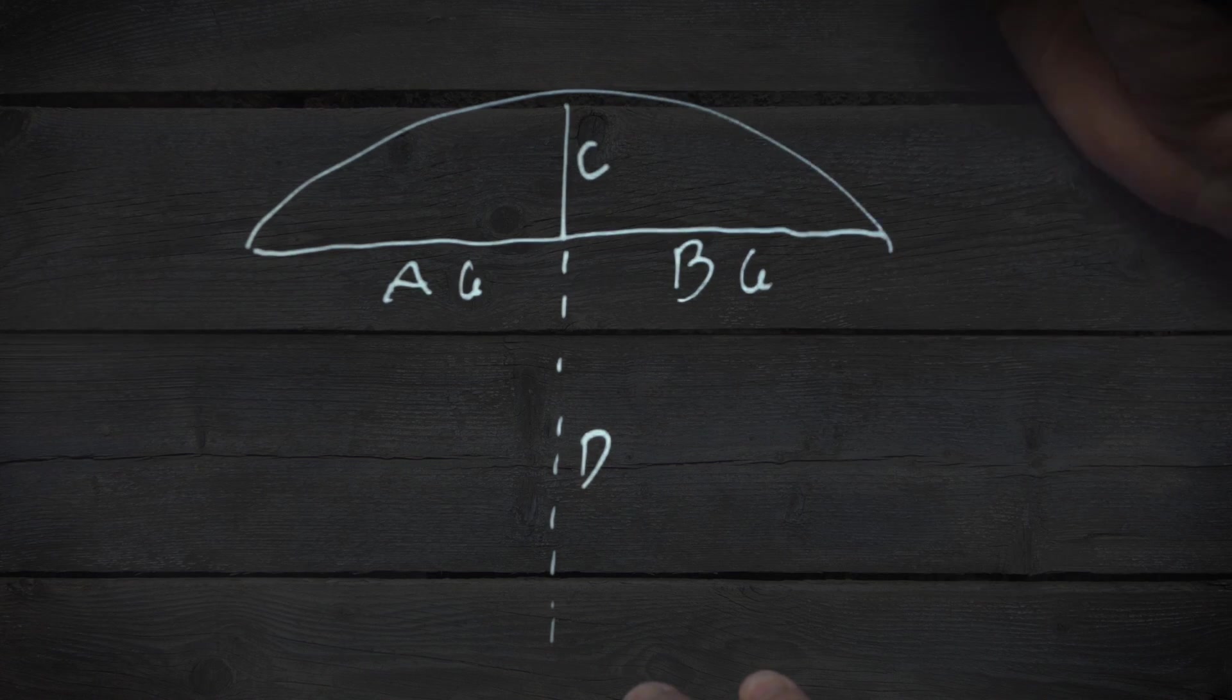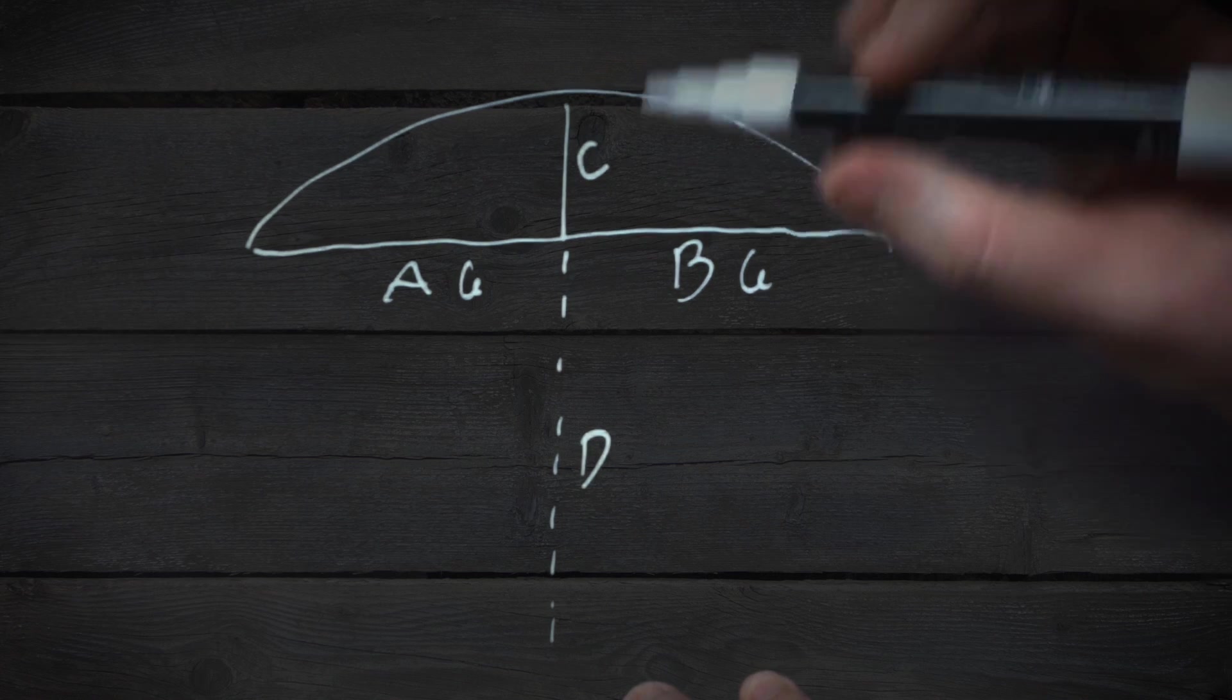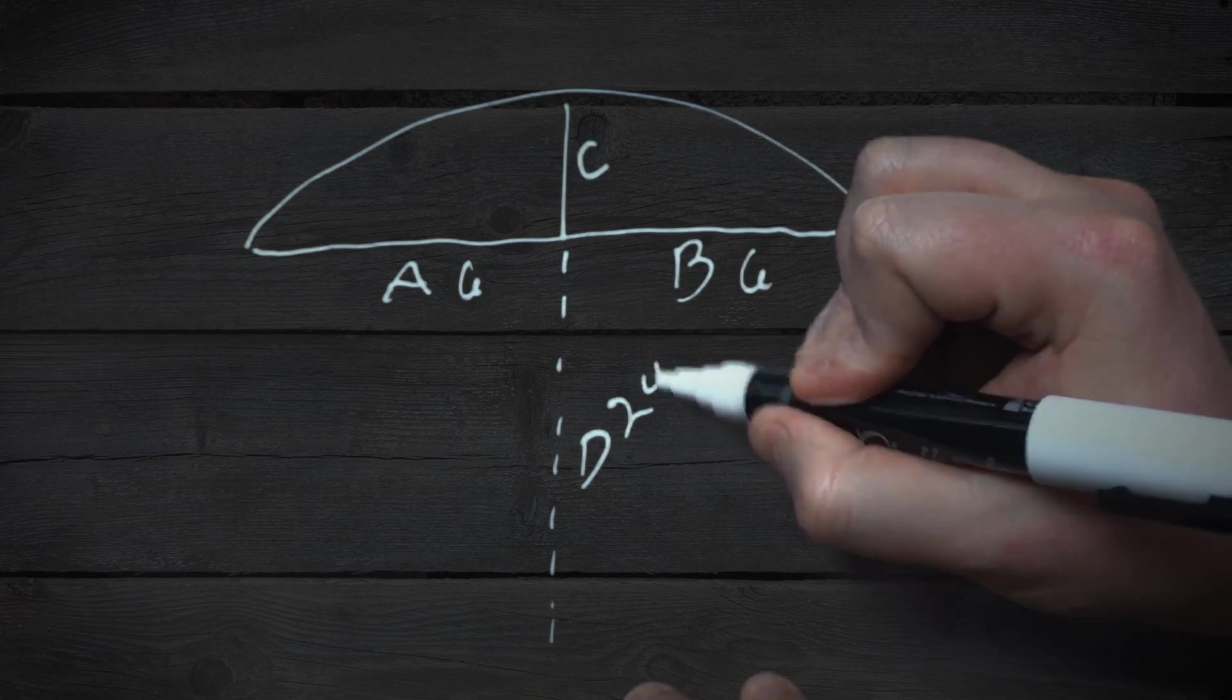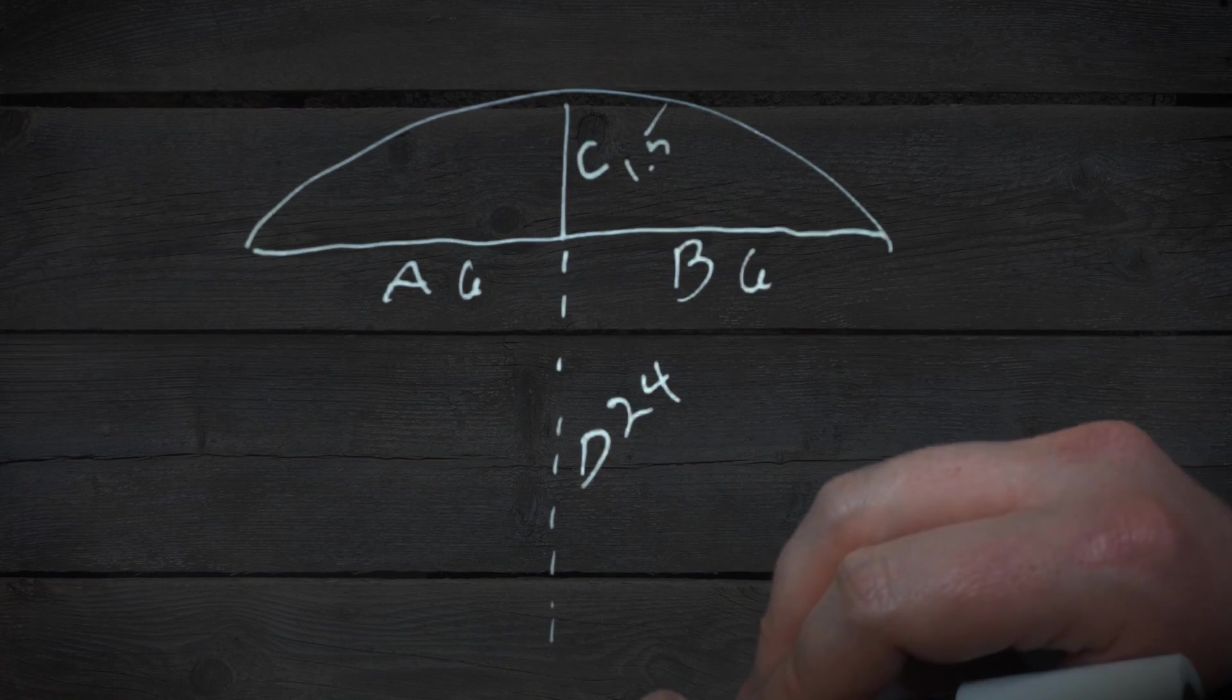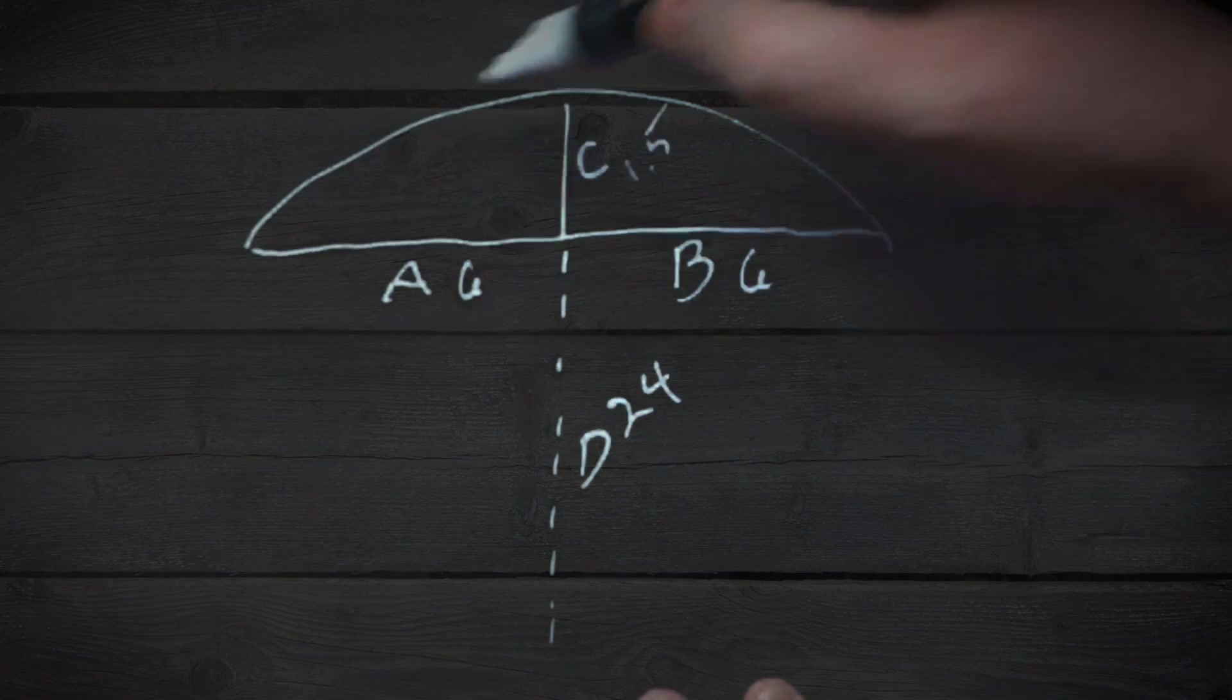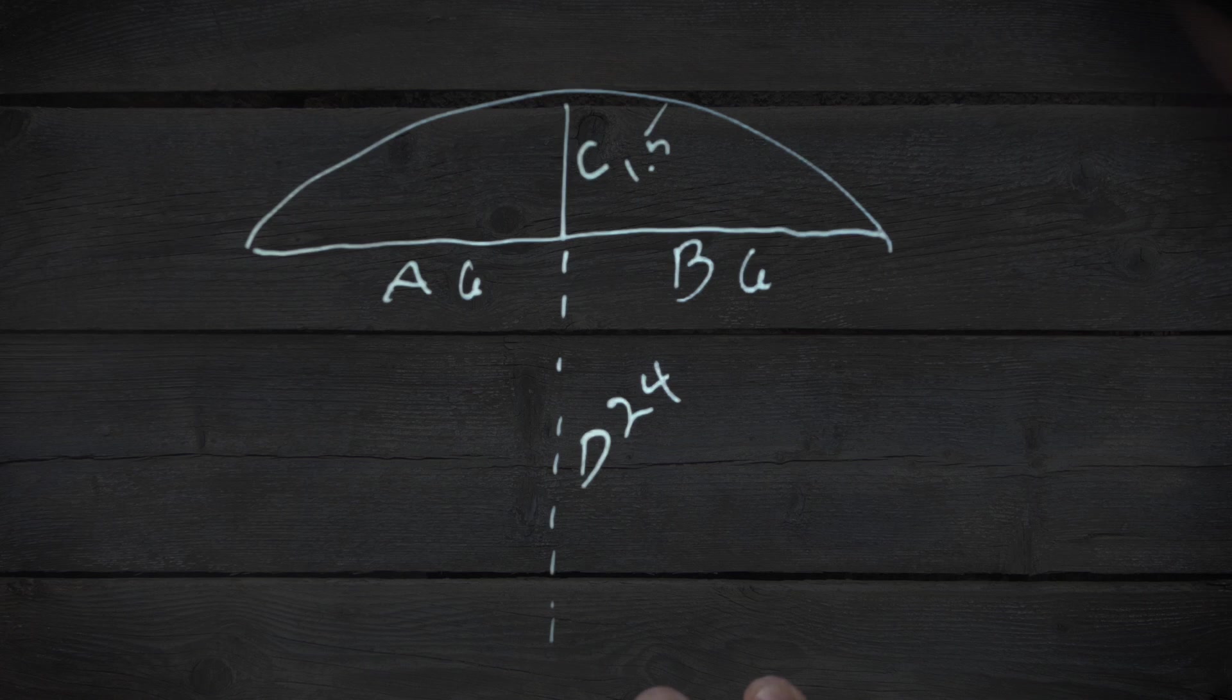36 divided by our 1.5, which was our height, is going to be 24. And then since this is 1.5, we know that the diameter of our circle that was used to make that arc is going to be 24 plus 1.5, or 25.5.